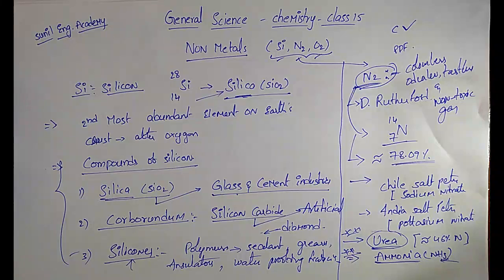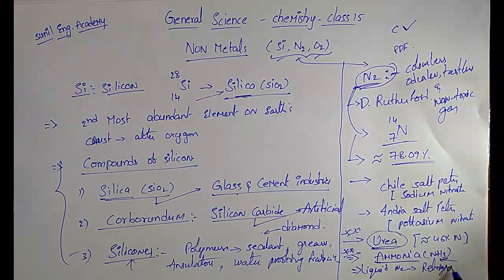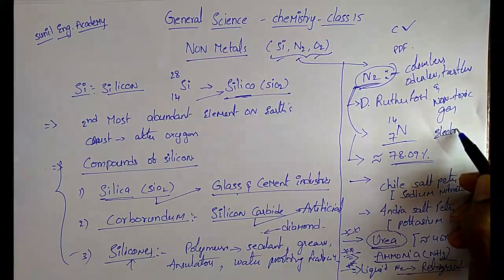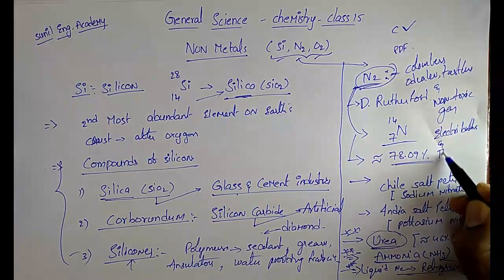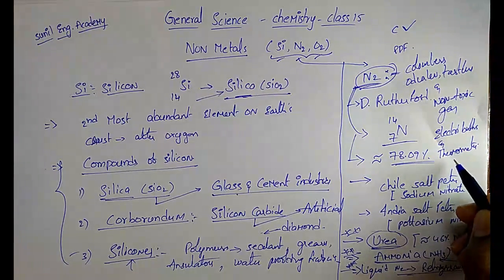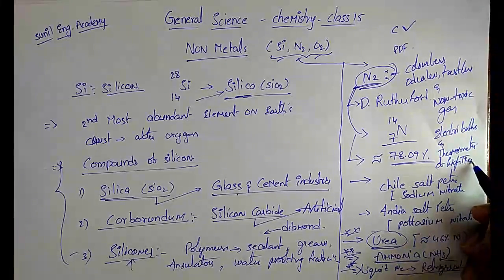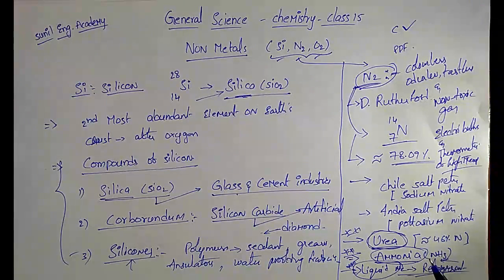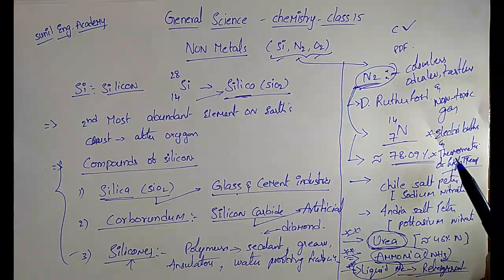Nitrogen is used in manufacturing of ammonia and urea. It is also used in making electric bulbs and in some types of thermometers for measuring high temperatures.